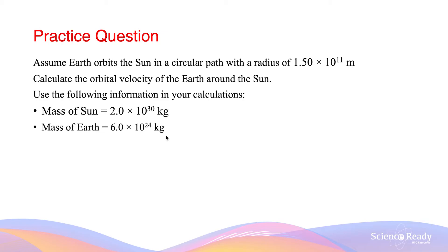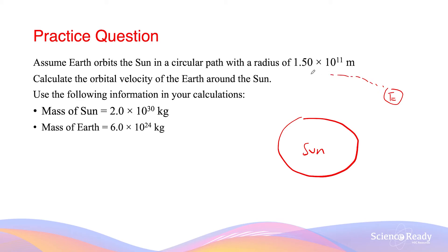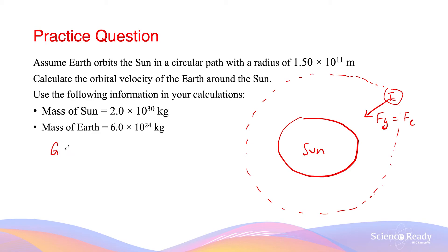Now let's look at a question concerning the orbital motion of planets around the Sun. Assume Earth orbits the Sun in a circular path with a radius of 1.5 × 10¹¹ metres, and calculate the orbital velocity of the Earth around the Sun. We are given the mass of the Sun and the mass of the Earth. Drawing a picture helps: the Sun is at the centre, the Earth orbits it, and the gravitational force exerted by the Sun on the Earth provides the centripetal force required for the circular motion.